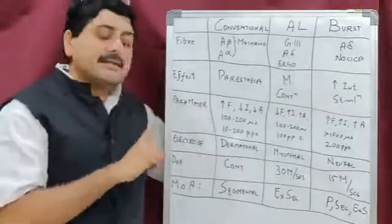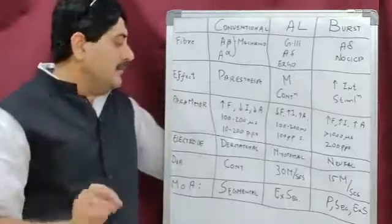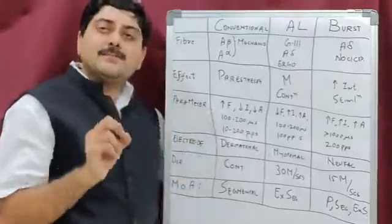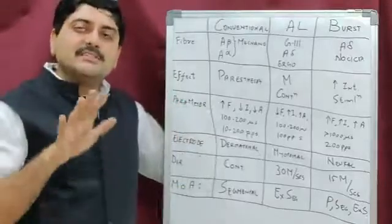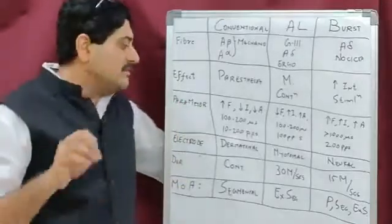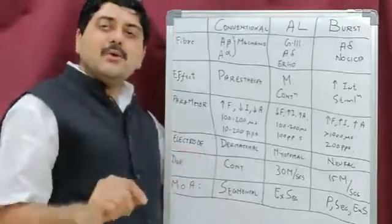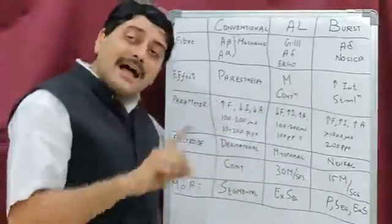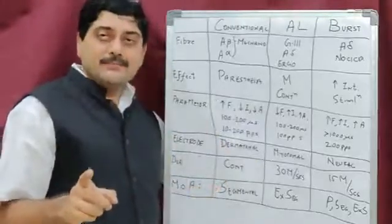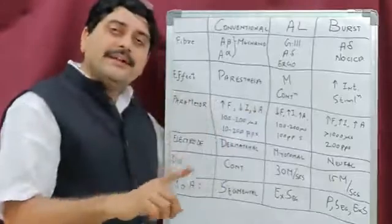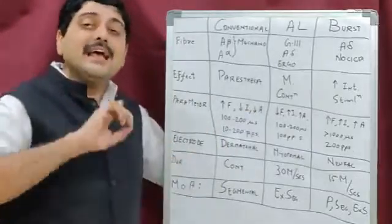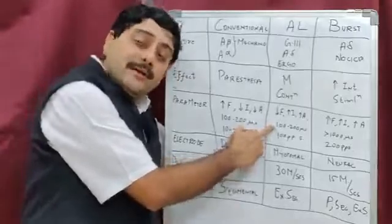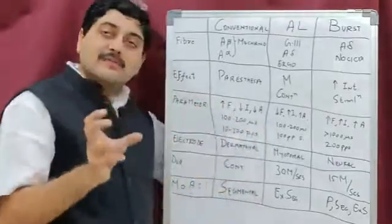The parameters: Conventional TENS is high frequency, low intensity, and low amplitude. It has a 100 to 200 microsecond pulse width — the lowest — and 10 to 200 pulses per second frequency — also the lowest. AL TENS is low frequency, high intensity, and high amplitude, with a pulse width of 100 to 200 microseconds and a frequency of 100 pulses per second.